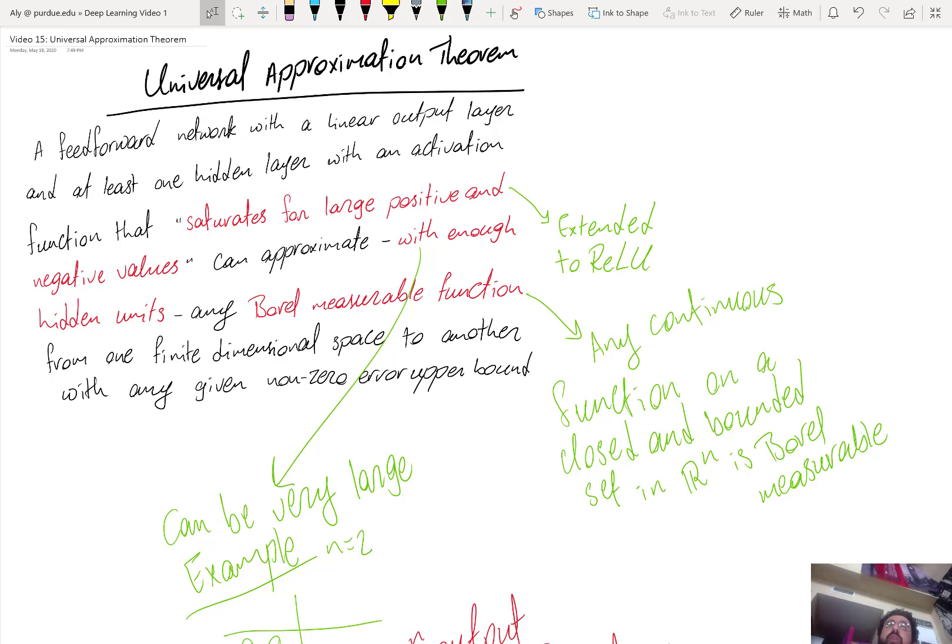Because we said saturation is not a good thing. Well, saturation is not a good thing for gradient-based learning. This is one specific way of optimizing neural networks. But this theorem is not about how to optimize the neural network. It's about what the neural network can do regardless of how you can reach this objective. So it's a computational ability.